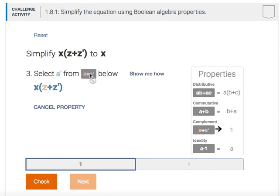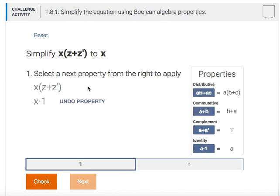Now it's asking me to select the second term, the a prime. So in this case, it's z prime. And now we're ready to apply the property to that expression. And the property has been applied, a or a prime is one, so you can see that z or z prime has been replaced by one.